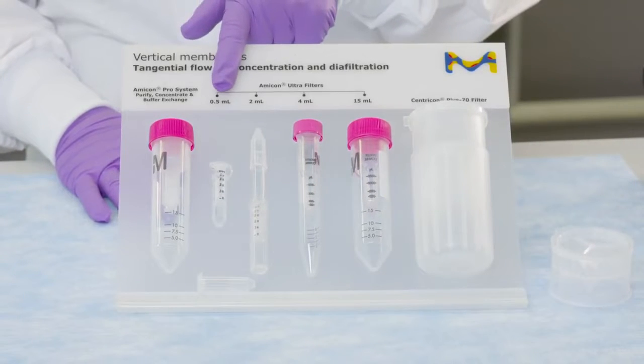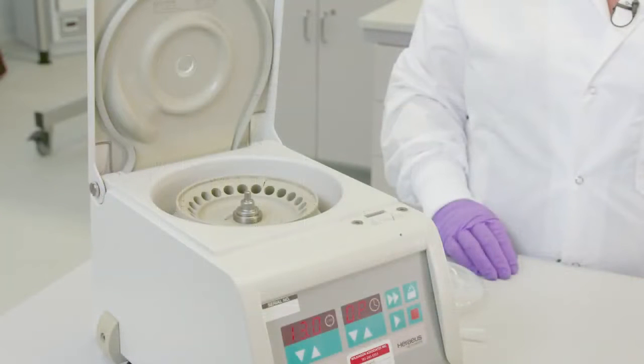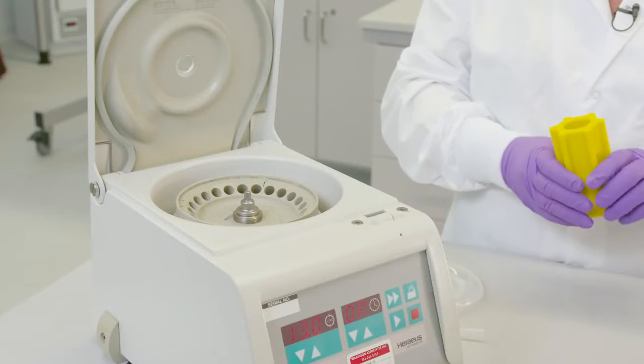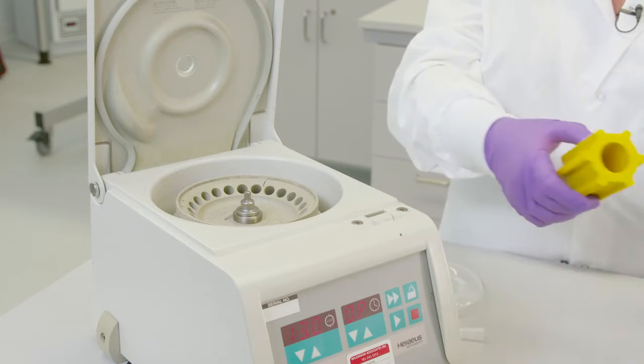The Amicon family can accommodate processing volumes from 0.5 mil to 70 mil. Some rotors do not need rotor cushions in the base, but those that require these ensure the geometry will accommodate the shape of the bottom of the filtrate tube.